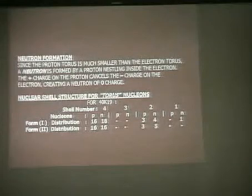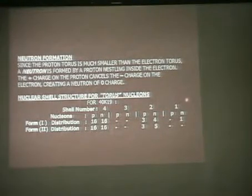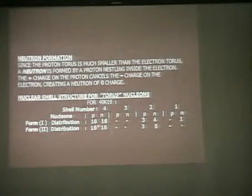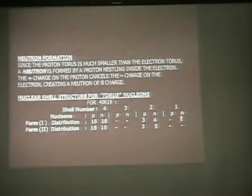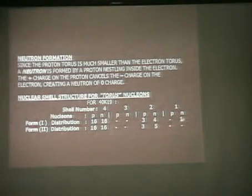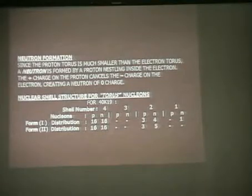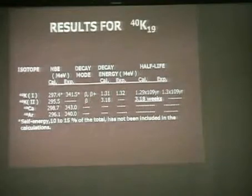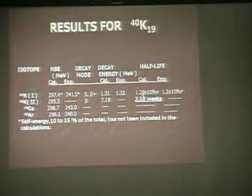The electron is negative and the proton is positive. If the proton sits inside the electron, you have a neutral particle — a neutron. Looking at potassium-40 and its nuclear shell structure, in one form you get one neutron in one shell, four neutrons in another, and three protons in another shell. In a second form, you get five neutrons and three protons both in the second shell. These different configurations give very different properties and very different half-lives.